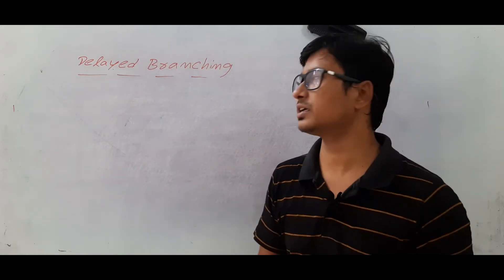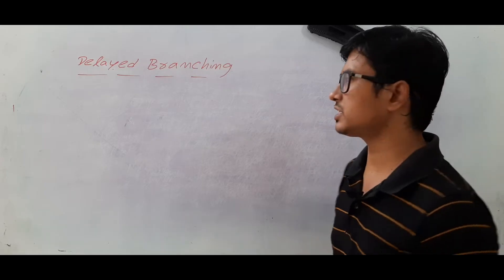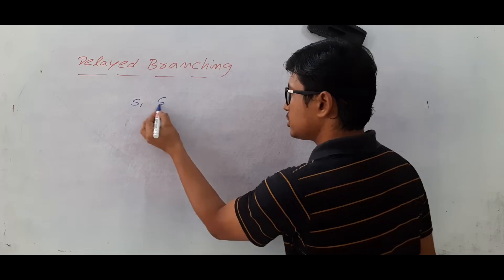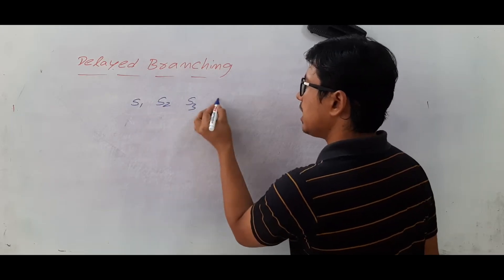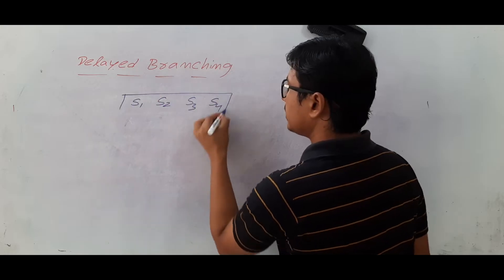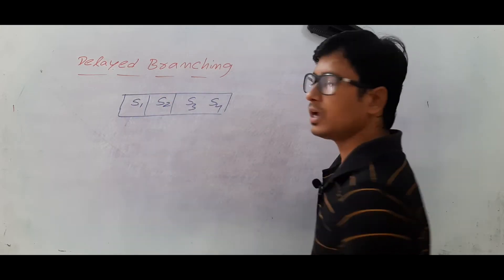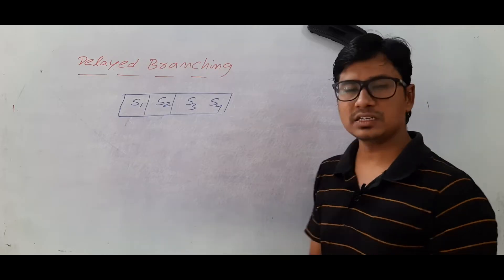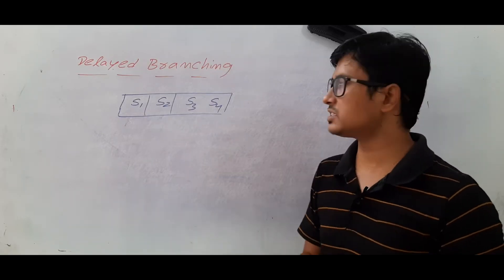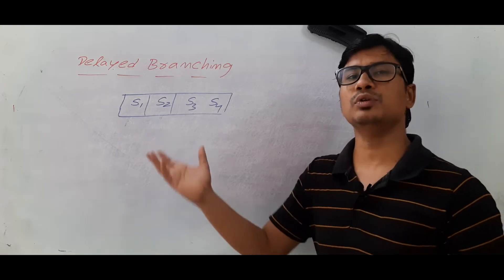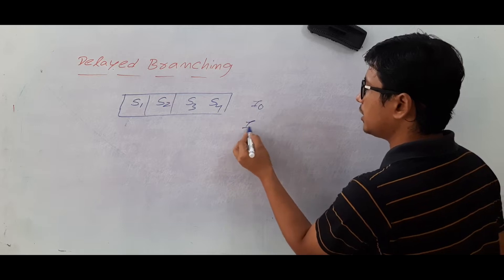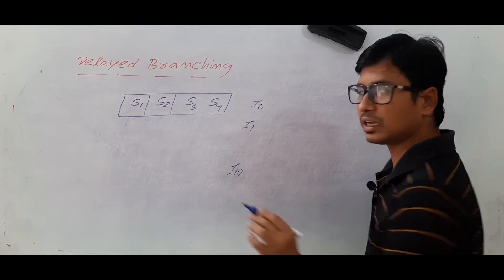To execute any instruction I should perform four stages: stage one, stage two, stage three, and stage four. I want to execute some instructions — remember that if branch instructions are there, the result of the branch instruction will come to know after stage two. Suppose I want to execute I0, I1 to I10 instructions.